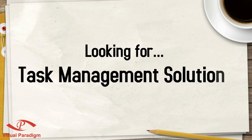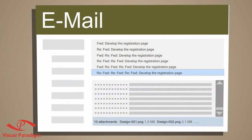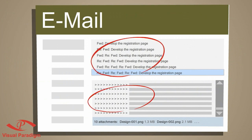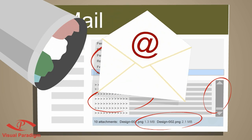Want a solution to manage your software development activities? Some teams like to use email to manage tasks, until they're aware of problems like unclear email subjects, lengthy email content, seemingly endless scrolling of content, long attachment lists, and important emails ending up in the junk box.